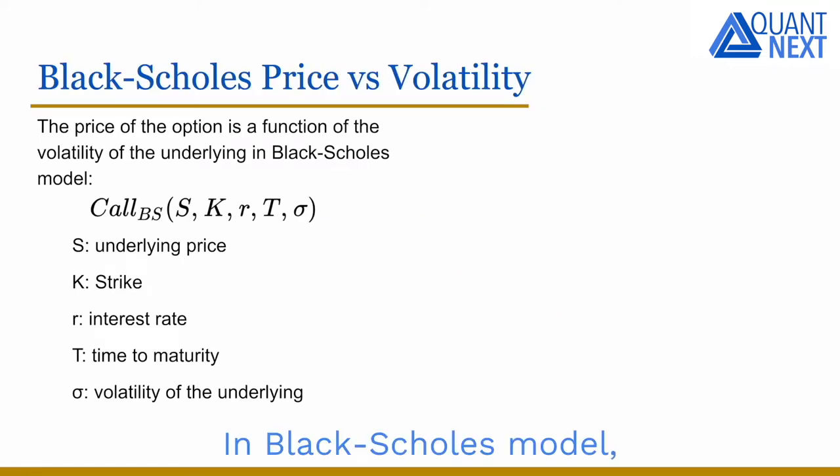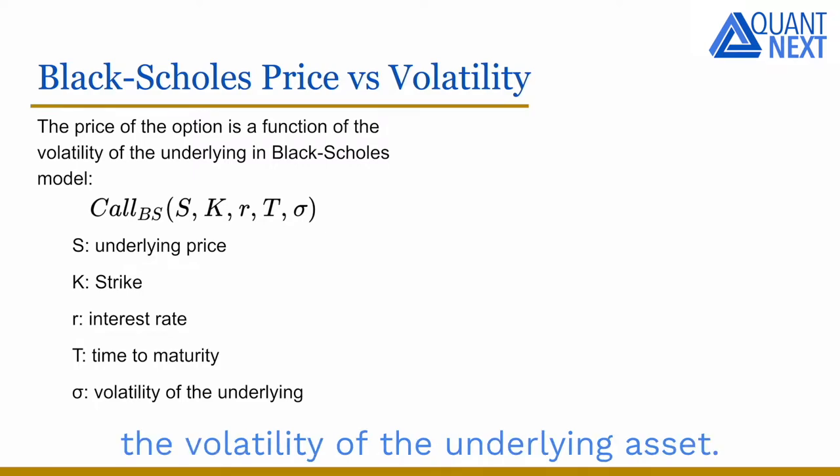In the Black-Scholes model, the price of an option is a function of five variables: the current price of the underlying asset, the strike price, the risk-free interest rate, the time to maturity, and the volatility of the underlying asset.